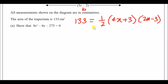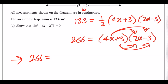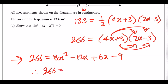Multiply both sides by 2 to clear the half: 266 = (4x + 3)(2x − 3). Expanding: 4x × 2x = 8x², 4x × −3 = −12x, 3 × 2x = +6x, 3 × −3 = −9. Tidying up: 266 = 8x² − 6x − 9, and subtracting 266 across gives the required quadratic.